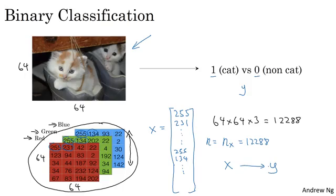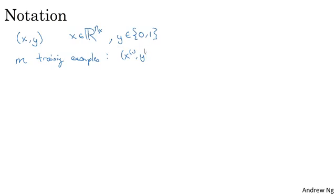Let's now lay out some of the notation that we'll use throughout the rest of this course. A single training example is represented by a pair (x, y), where x is an nx dimensional feature vector, and y, the label, is either 0 or 1. Your training sets will comprise lowercase m training examples, and so your training sets will be written (x1, y1), which is the input and output for your first training example, (x2, y2) for your second training example, up to (xm, ym), which is your last training example, and then that all together is your entire training set.